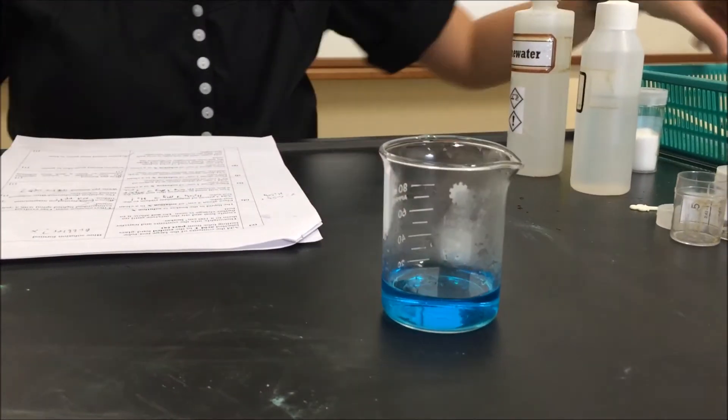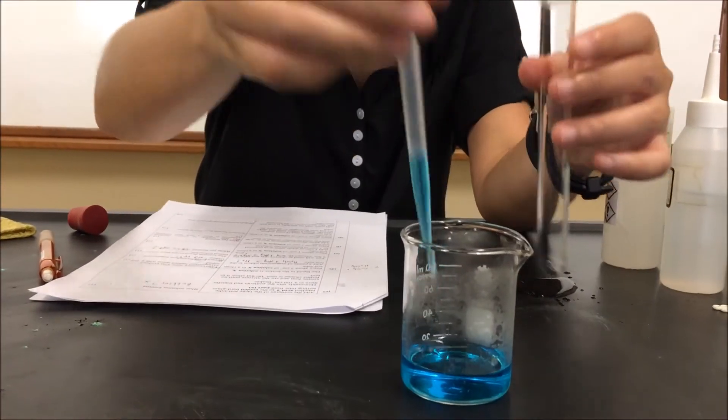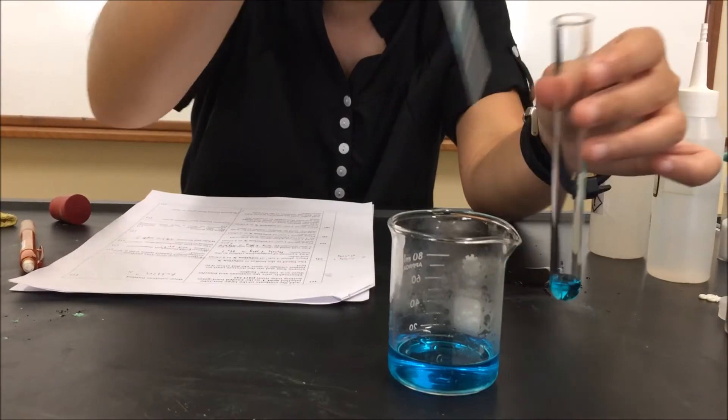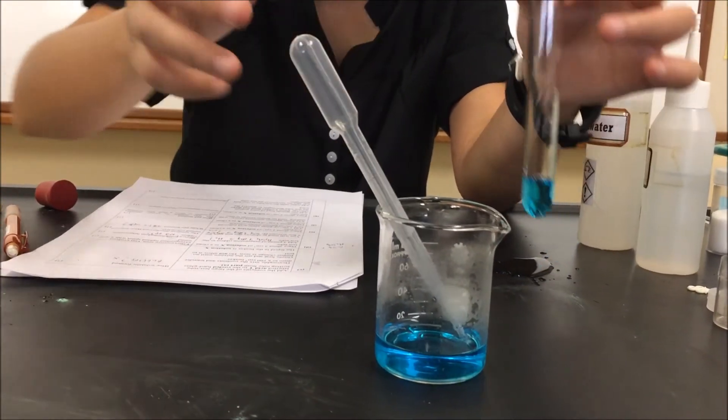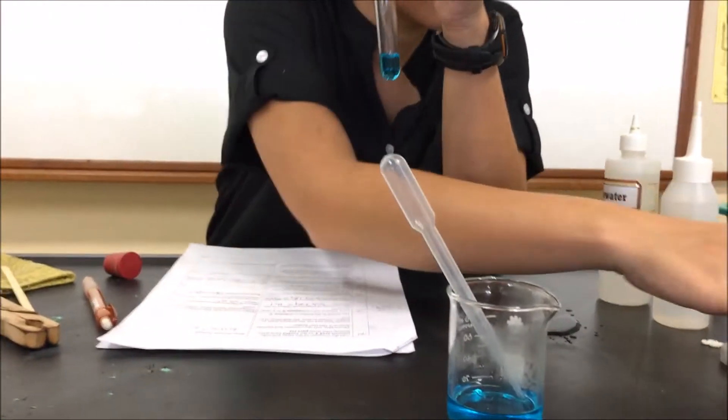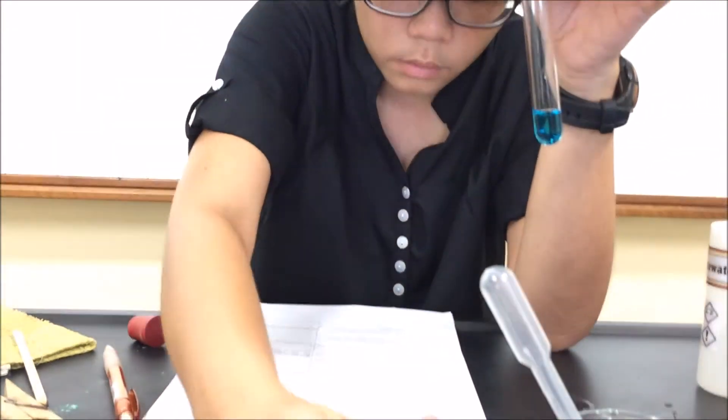We will proceed with part D where we take 2 cubic centimeters of solution Z, the blue solution, put it in a clean test tube. Next, we will add three pieces of magnesium ribbon. We understand that magnesium ribbon is a reactive metal, reactive enough to react with cold water. So we would expect bubbles.